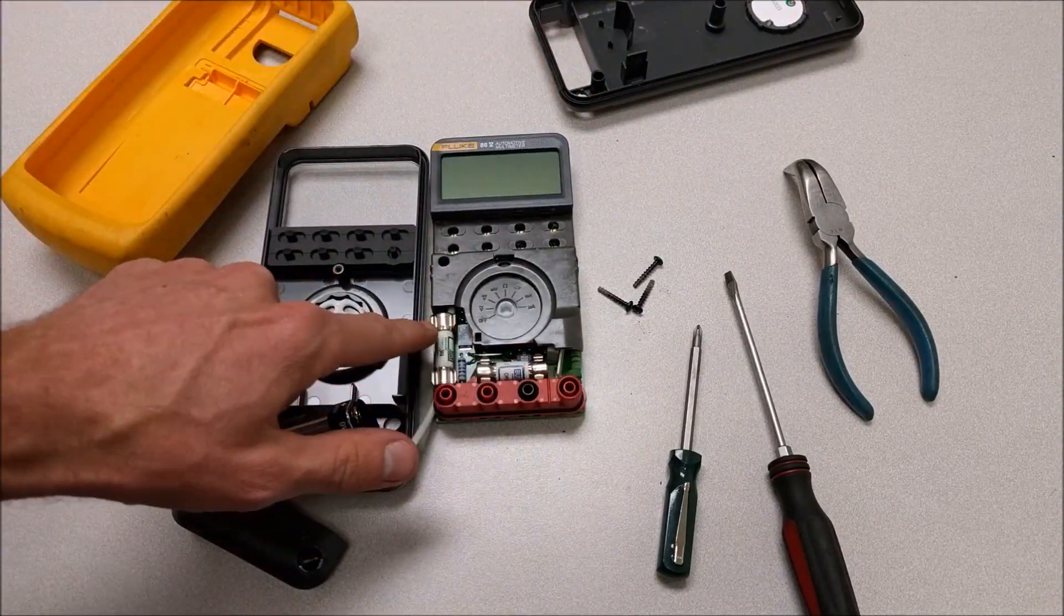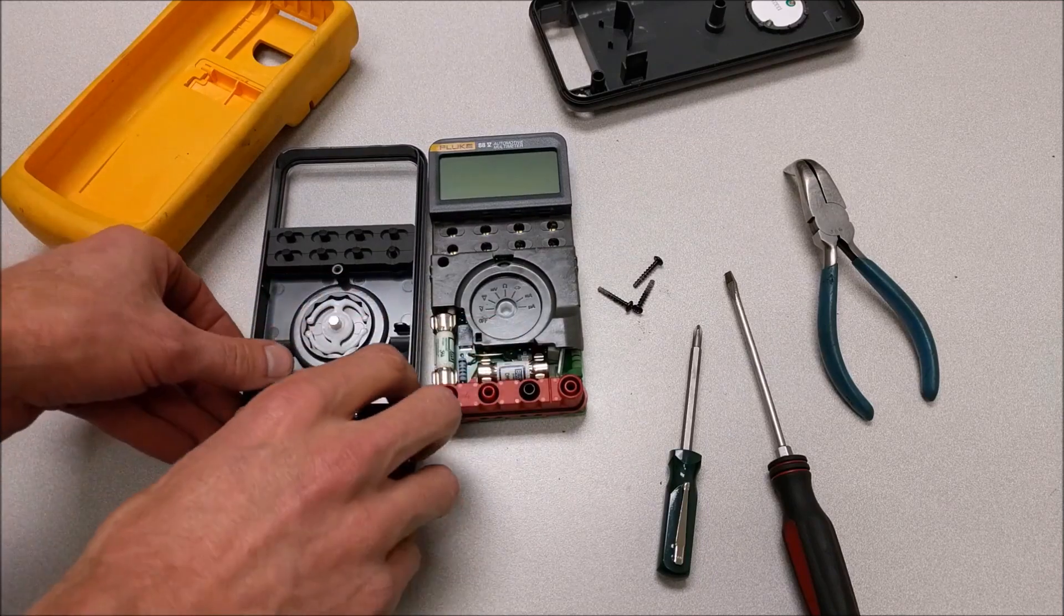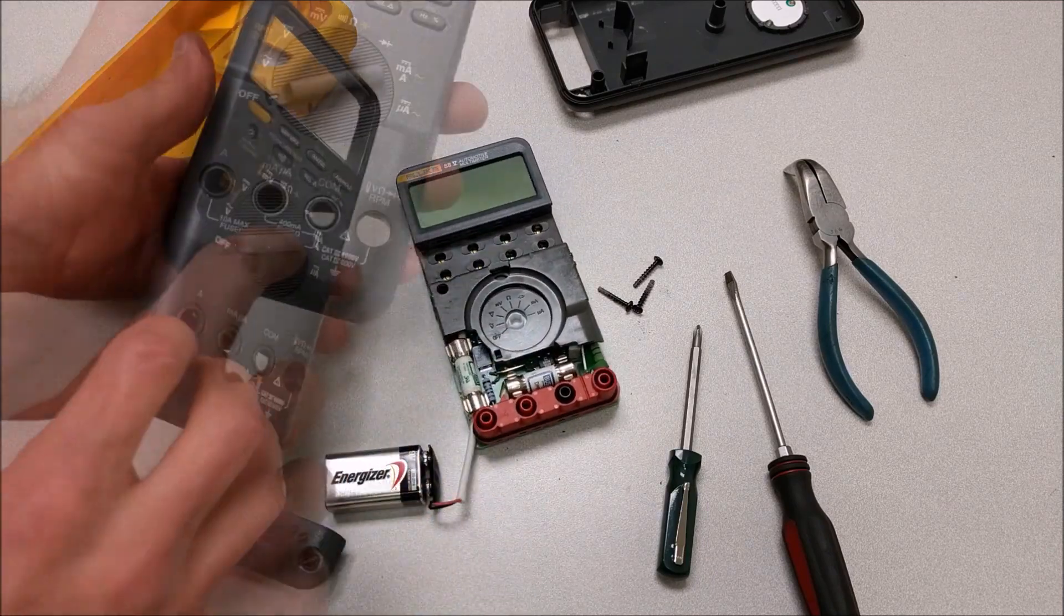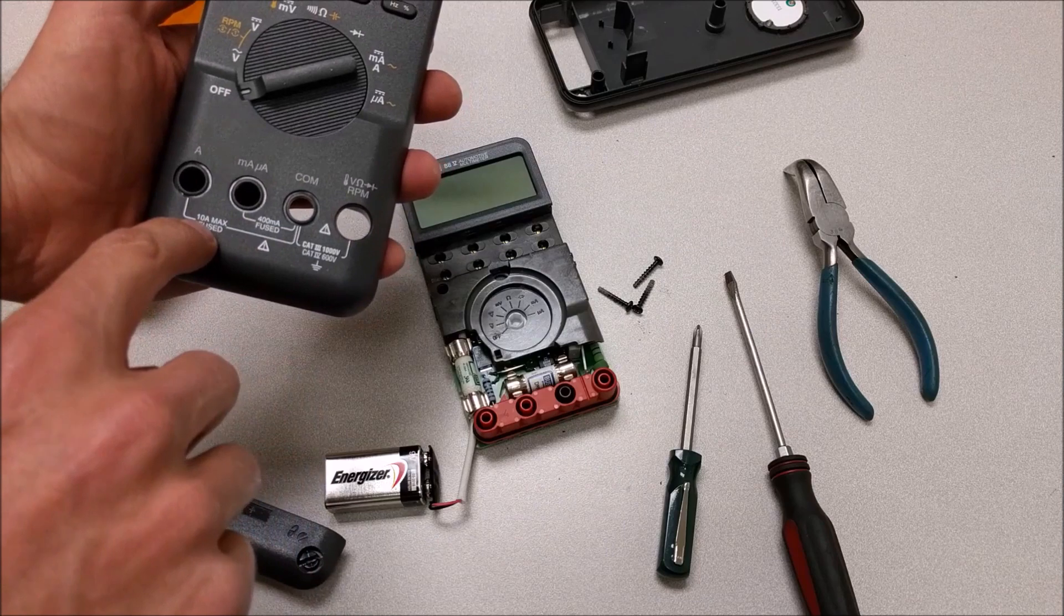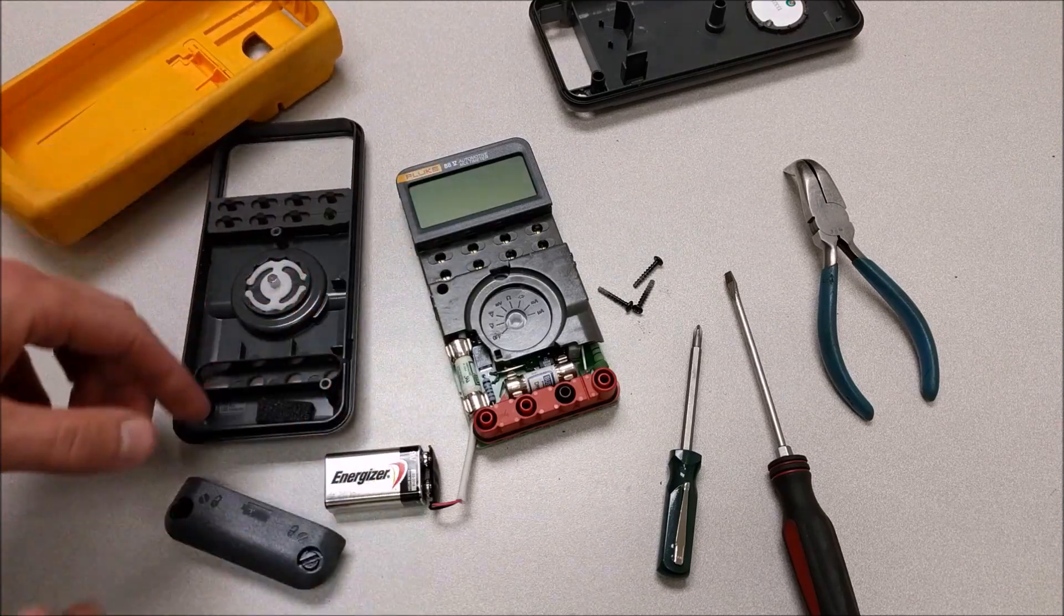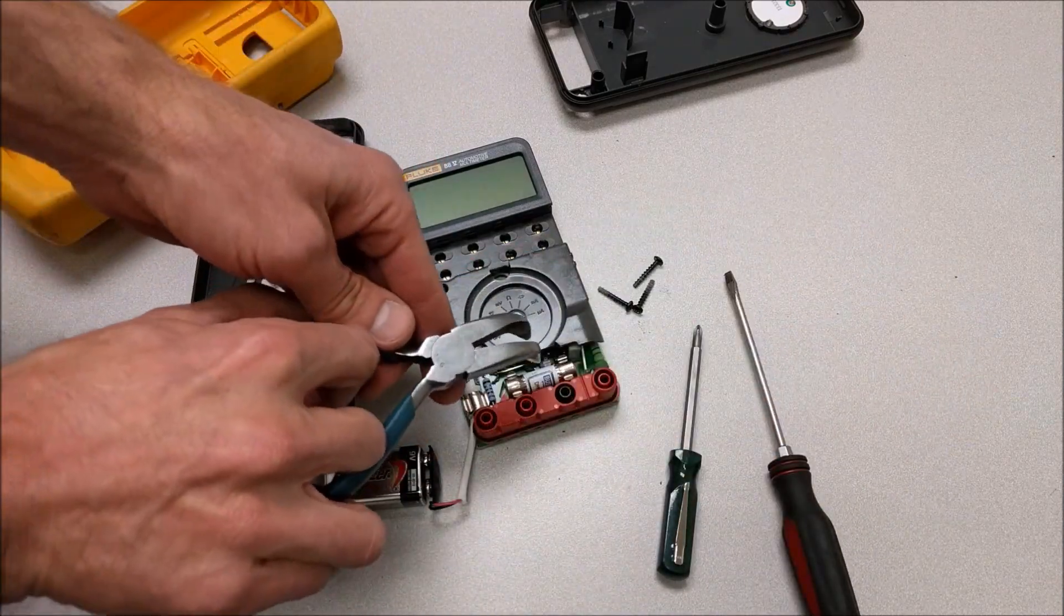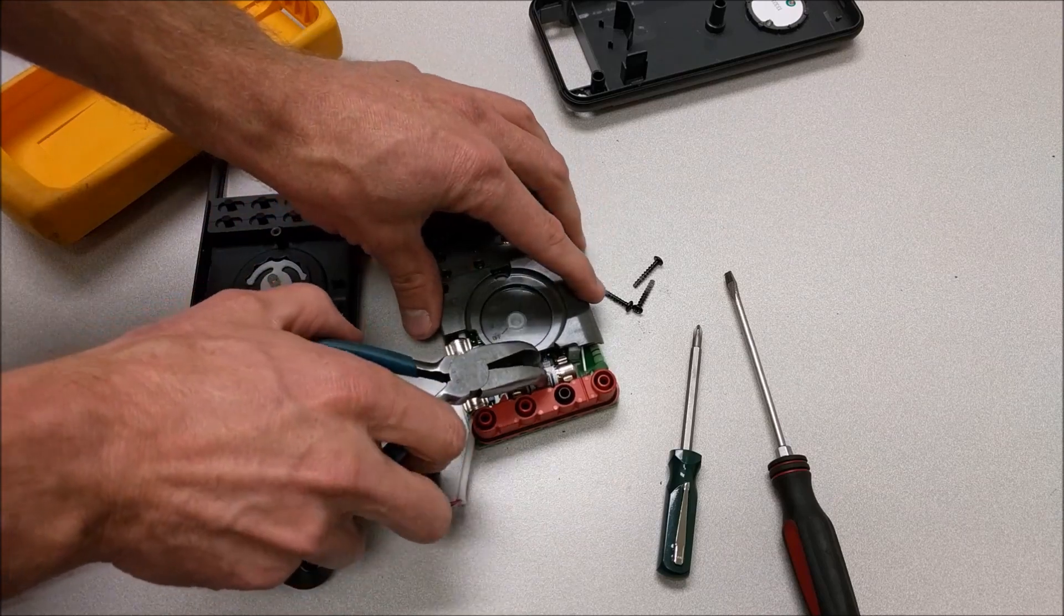And once we have it apart, we'll see the two fuses here. This meter, if you remember, has a 400 milliamp fuse and a 10 amp fuse. So they're right here. Grab them with a pair of pliers, makes them easier to pull out.